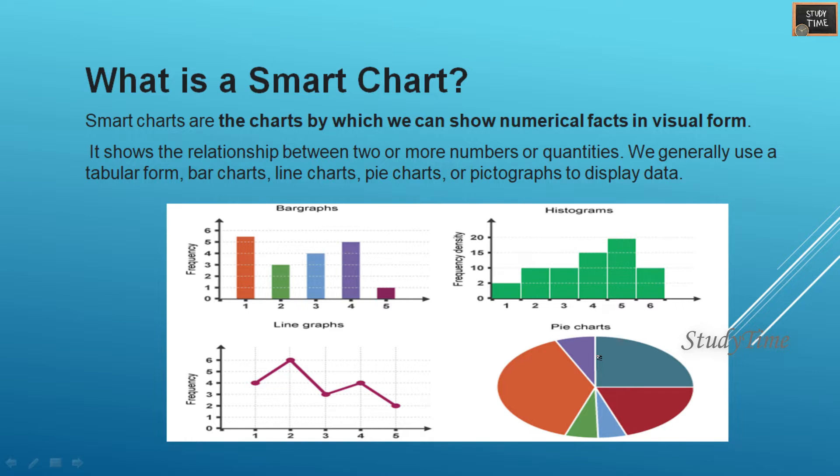What is a smart chart? Smart charts are charts by which we can show numerical facts in visual form. It shows the relationship between two or more numbers or quantities. We generally use a tabular form, bar charts, line charts, pie charts, or pictographs to display data. So this is bar chart where it is like a bar.